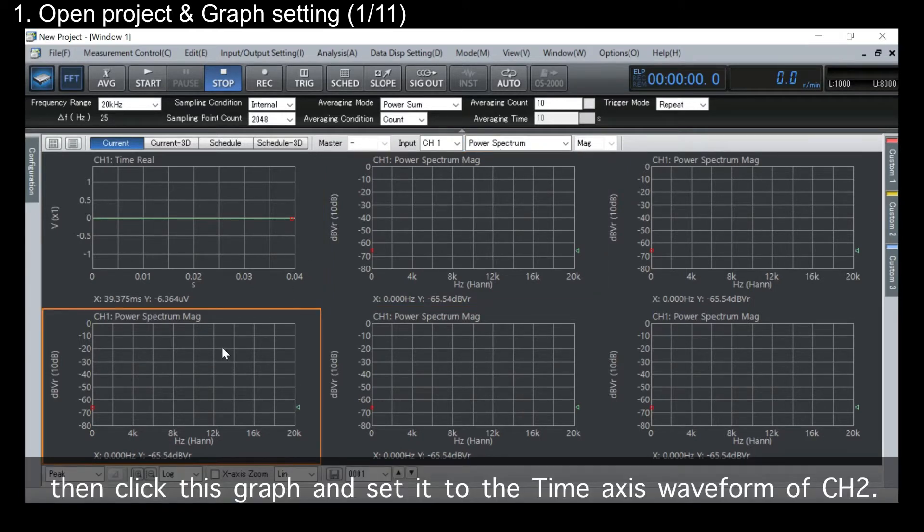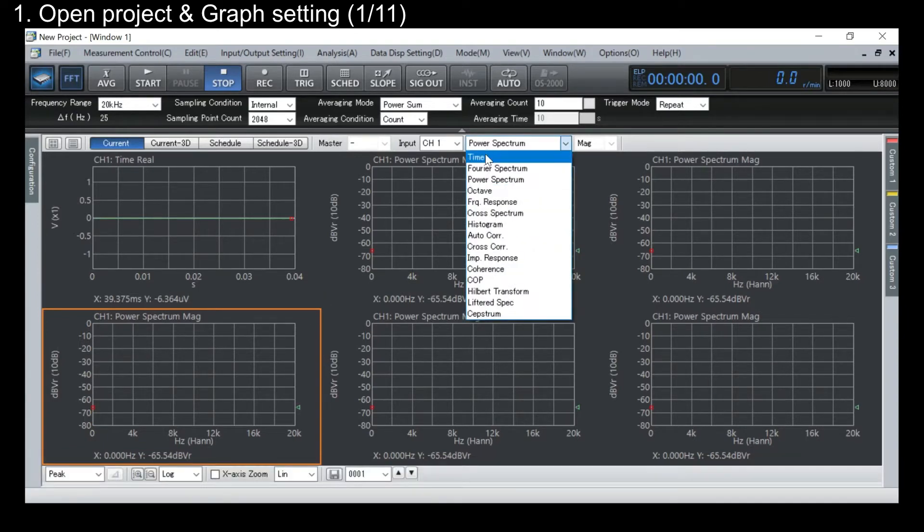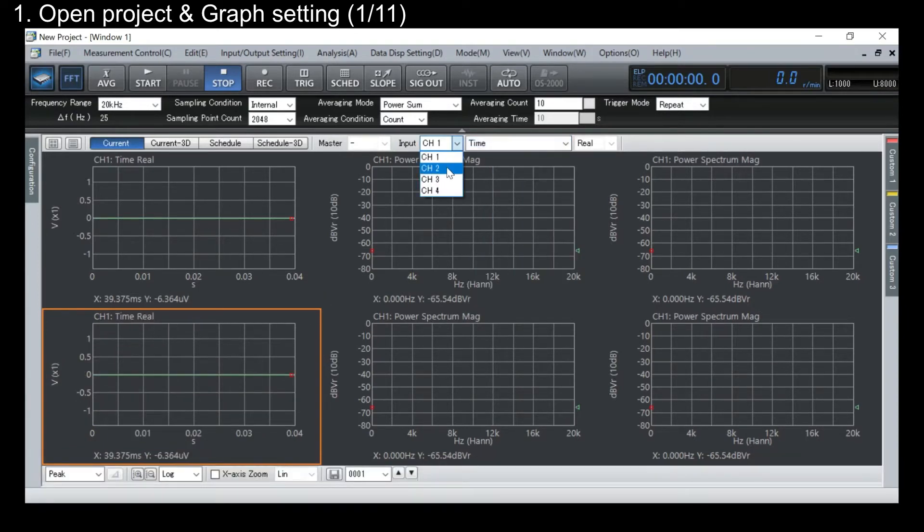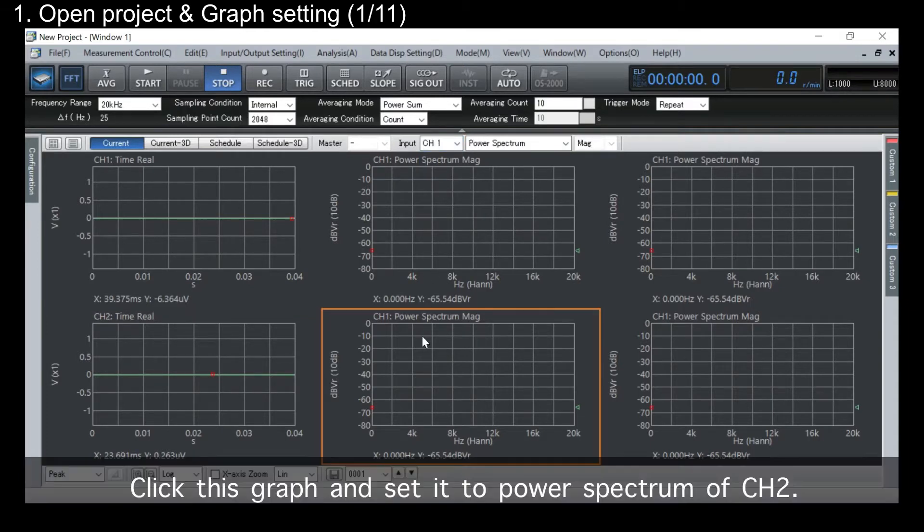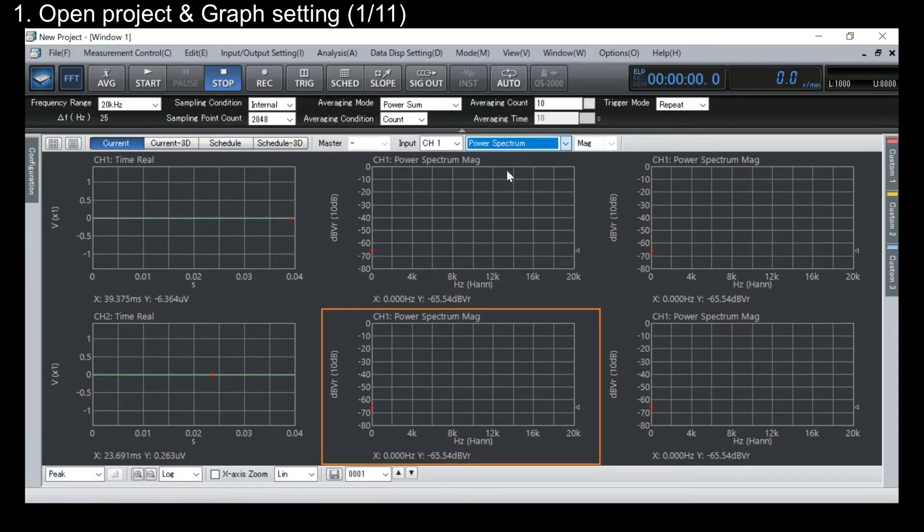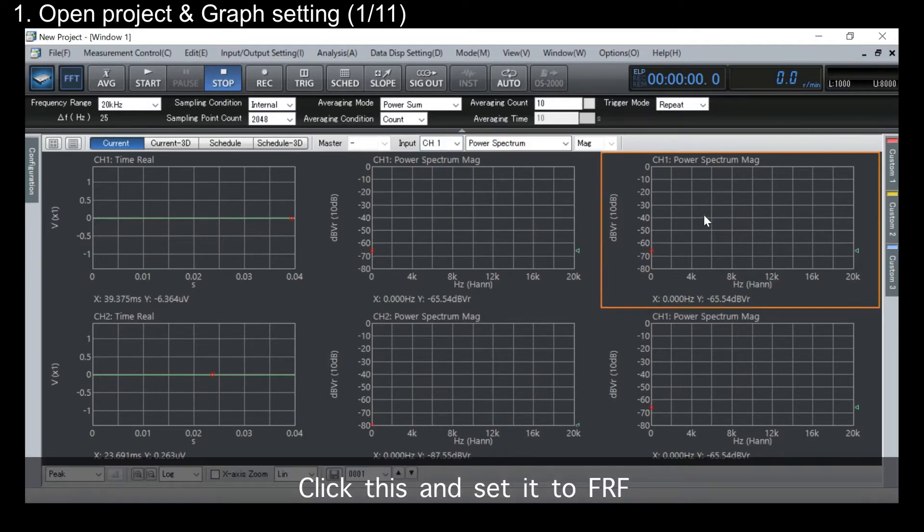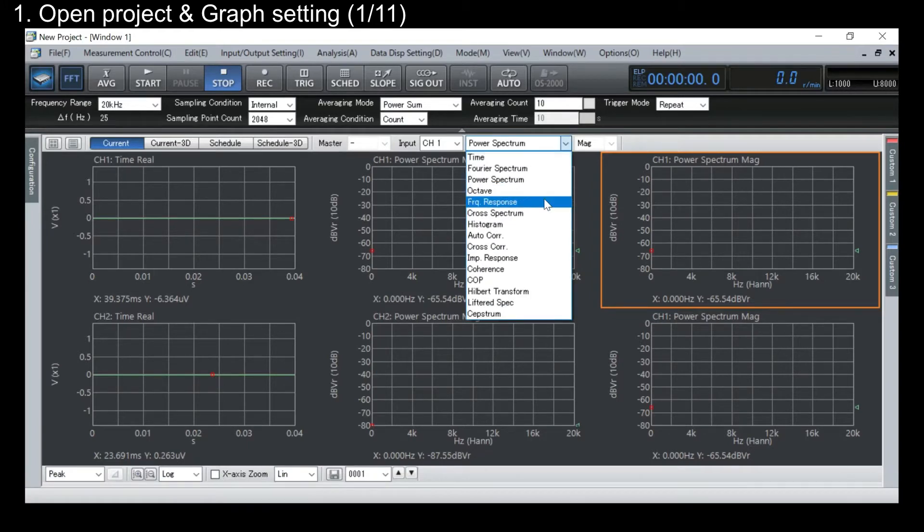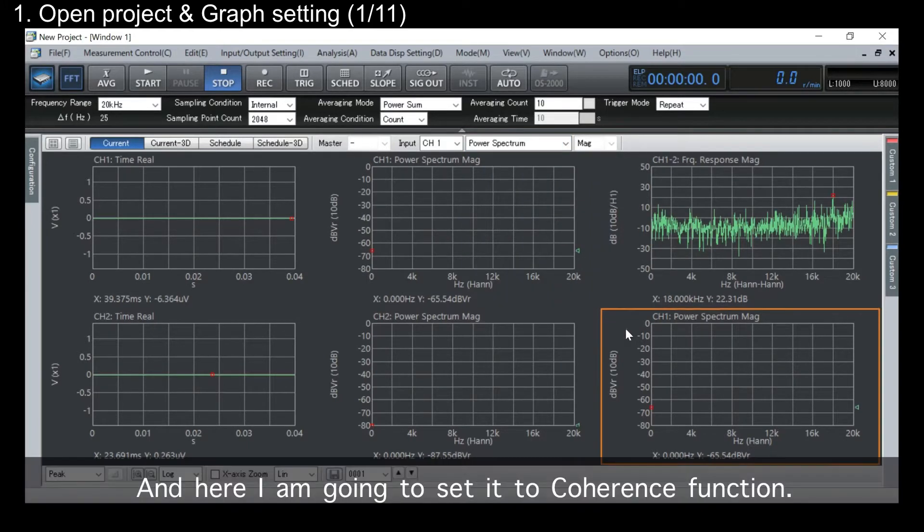Then, click this graph and set it to the time axis waveform of channel 2. Click this graph and set it to the power spectrum of channel 2. And click this and set it to FRF. FRF stands for Frequency Response Function. And here, I'm going to set it to the coherence function.